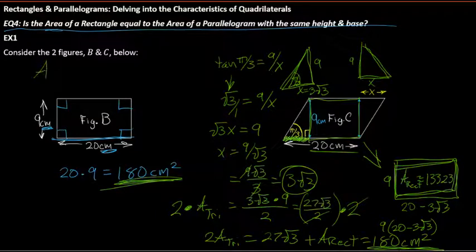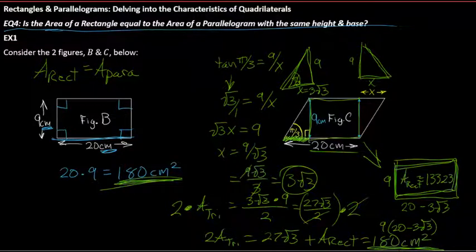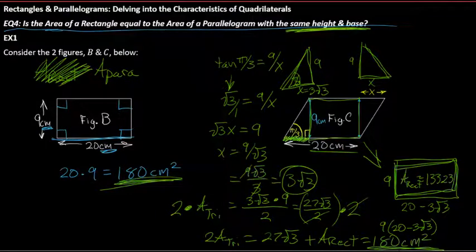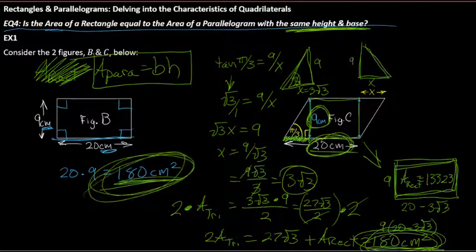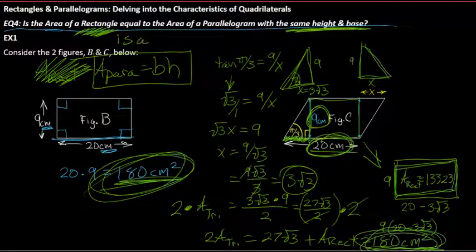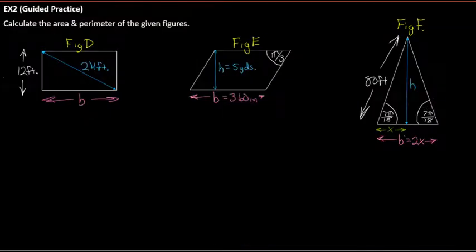That tells us the area of a rectangle equals the area of a parallelogram with the same height and base. So we don't need a separate rectangle formula — the area of a parallelogram is simply base times height. A rectangle is a parallelogram, so the same formula applies.